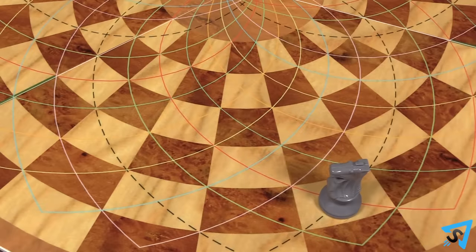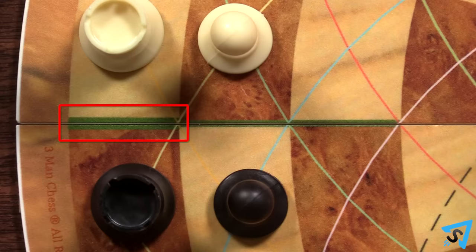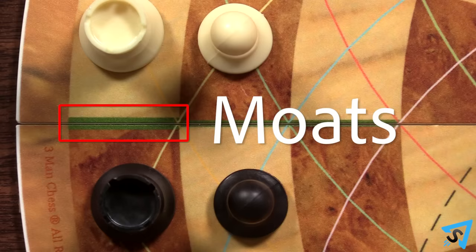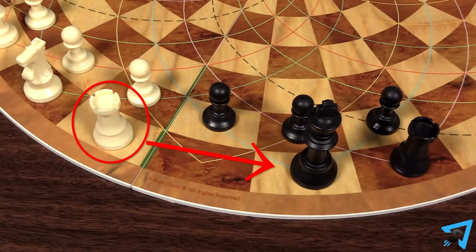This process of movement is necessary to maintain when dealing with moats. The thick green lines that border each team on the outer row are called moats. No piece can check an opponent's king through a moat, no matter what.